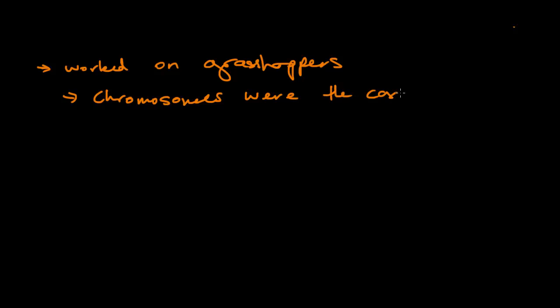And Sutton, as said here, worked on grasshoppers, so that's the first thing we can say. I've already said that in the beginning, but just again, so you guys remember. And then more than that, after working on grasshoppers, he was able to find out that the behaviour of chromosomes was really interlinked with Mendel's work and what Mendel had found out about inheritance. So he found out that chromosomes were the carriers of heredity units.